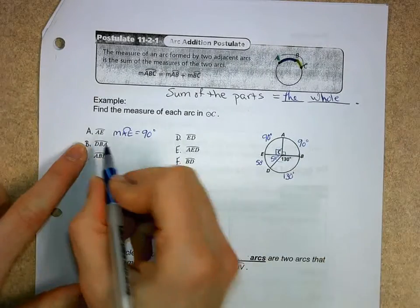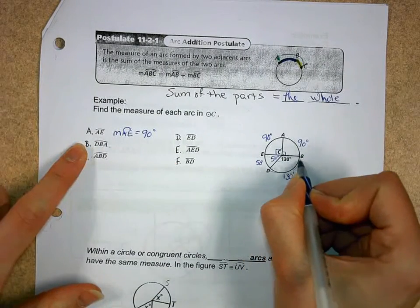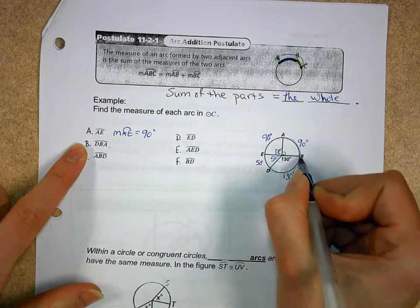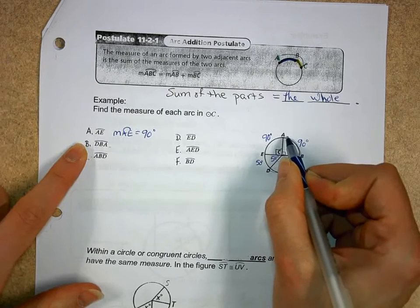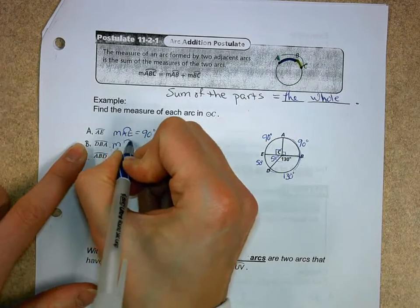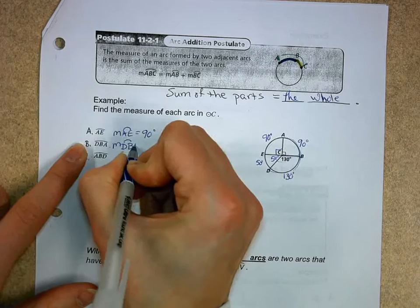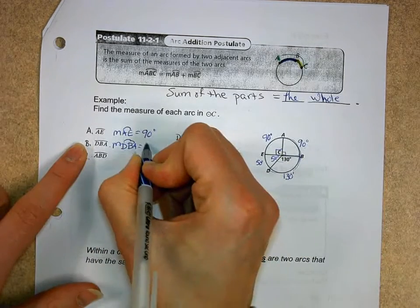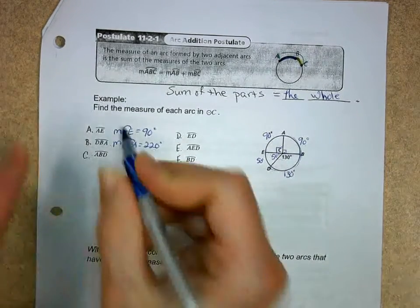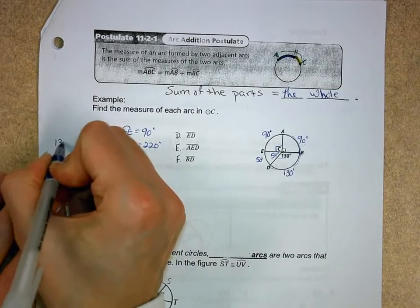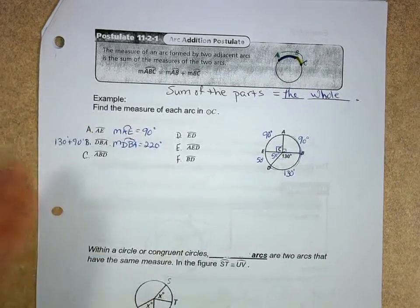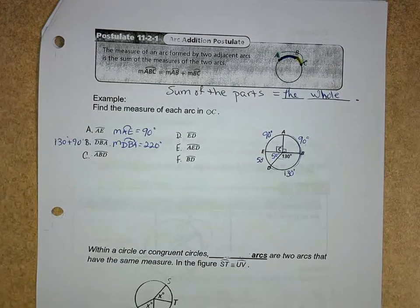Then we want to know the measure of arc DBA. Notice I started with D, I went to B, and then I ended at A. So the measure of arc DBA equals 130 plus 90, 220 degrees. In fact, I would really like you to show that. So let's just put our math off to the side so we can see it a little bit easier.